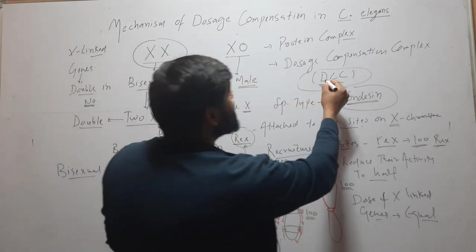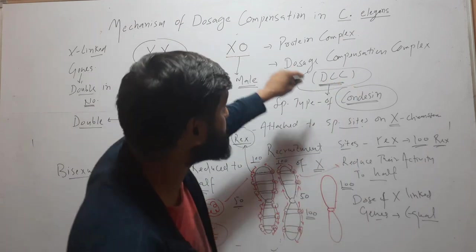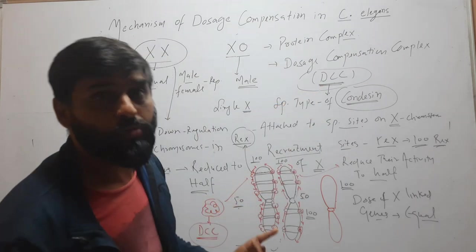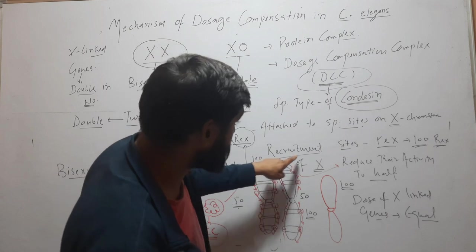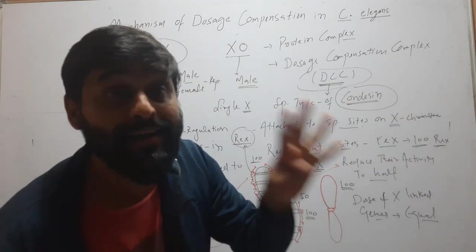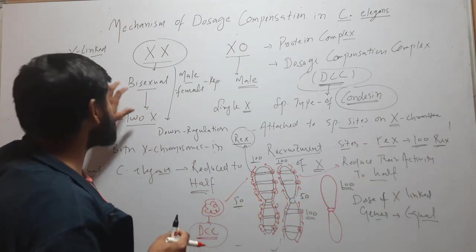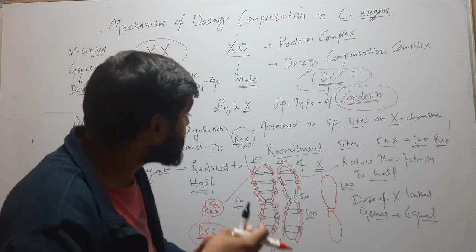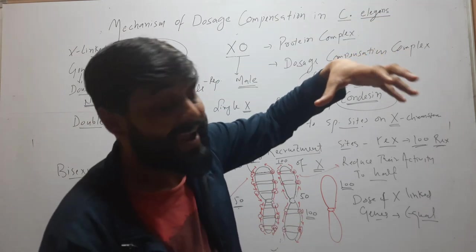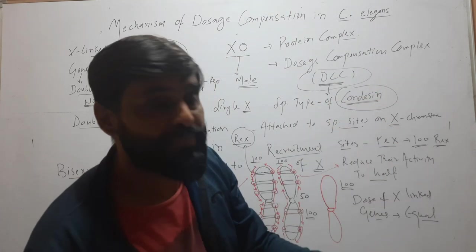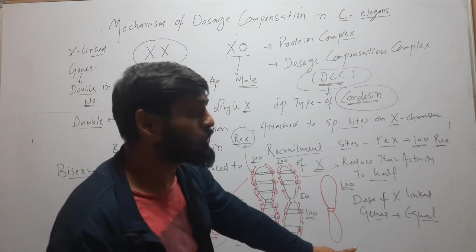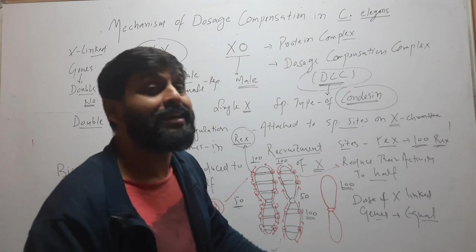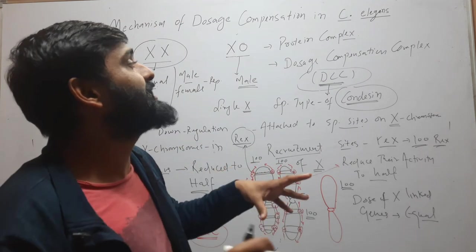In summary, dosage compensation in C. elegans is accomplished by the DCC — Dosage Compensation Complex — a special type of condensin complex. It attaches to approximately one hundred REX recruitment sites on each X chromosome in the bisexual organism, spreads across the chromosome, and down-regulates both X chromosomes to half activity. In males, DCC does not attach to the X chromosome, so its activity remains unchanged.